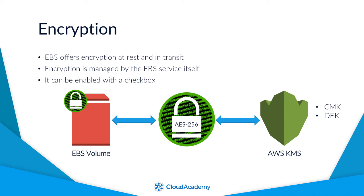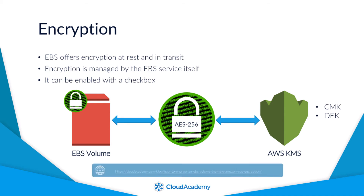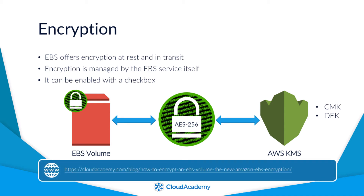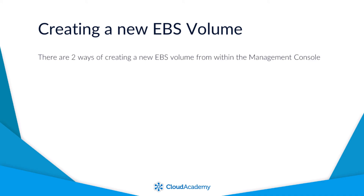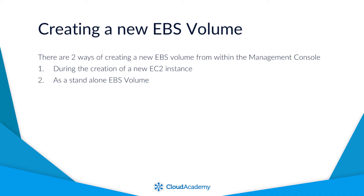You should also be aware that this encryption option is only available on selected instance types. For a detailed overview of exactly how this encryption process works, please take a look at the following blog post. As EBS volumes are separate to EC2 instances, you can create an EBS volume in a couple of different ways from within the management console: during the creation of a new instance and attach it at the time of launch, or from within the EC2 dashboard of the AWS management console as a standalone volume, ready to be attached to an instance when required.